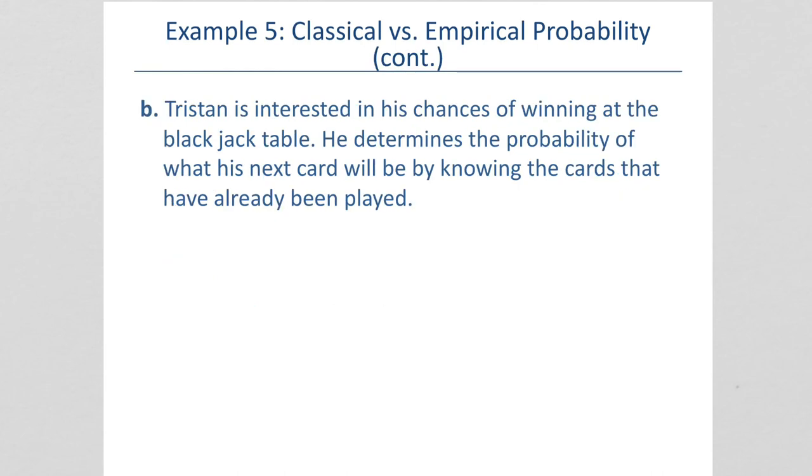Tristan is interested in his chances of winning at the blackjack table. He determines the probability of what his next card will be by knowing the cards that have already been played. In this case, all cards have an equal chance. So, this is classical.